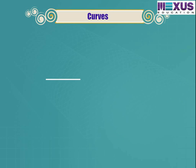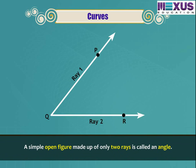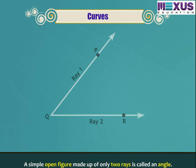In mathematics, a straight line is also called a curve. A simple open figure made up of only two rays is called an angle.